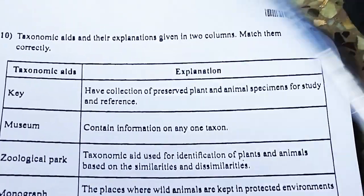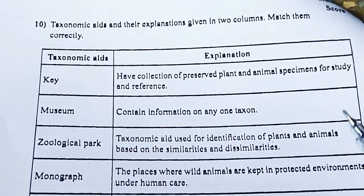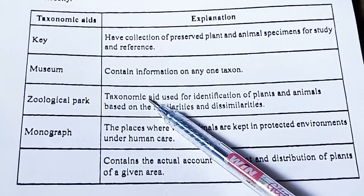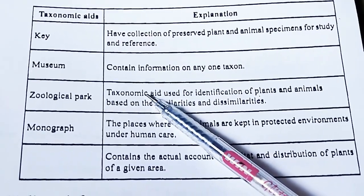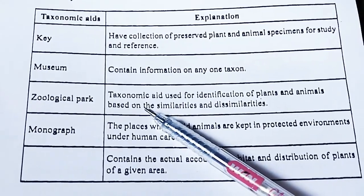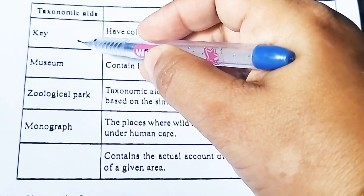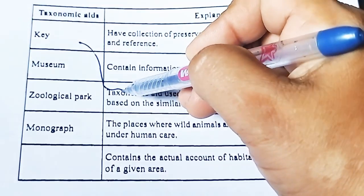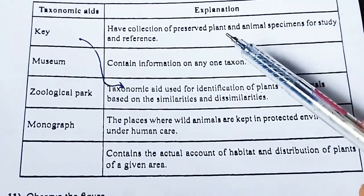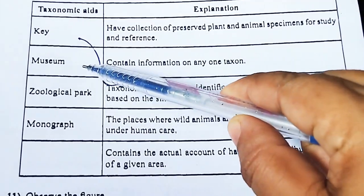Question 6: Taxonomic aids and their explanations are given in two columns — match them correctly. A Taxonomic key is a taxonomic aid used for the identification of plants and animals based on similarities and dissimilarities.